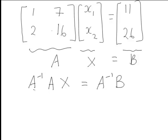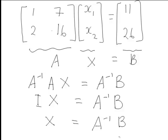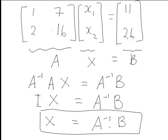From there A inverse A is always equal to the identity matrix I so the left hand side of that becomes IX equal to A inverse B. And the identity matrix times any matrix of the appropriate order is just equal to that matrix. So therefore to solve for our matrix X we need to find A inverse times B.